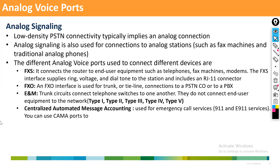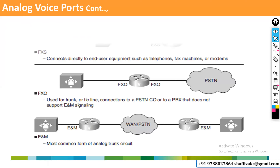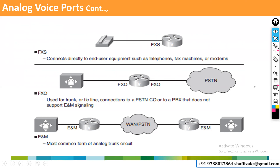So we have FXS and FXO ports. ENM and CAMA we don't use much. FXO is used to connect to PSTN and PBX systems. ENM can also be used between PBX and gateway. These are the different connectivity options: analog phone directly to router uses FXS, and connection from PSTN or PBX to the router uses FXO.